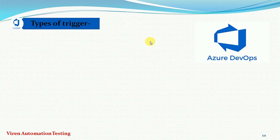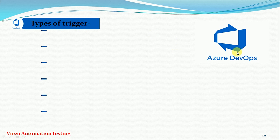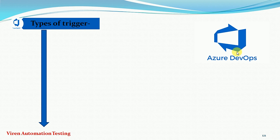Hello guys, welcome back. In this video session I am going to discuss the types of triggers. There are many types of triggers available in the Azure DevOps CI/CD pipelines. We will see them one by one.